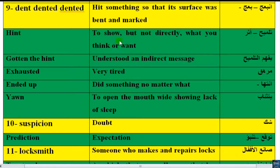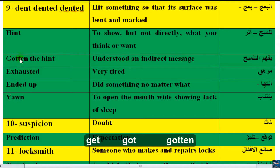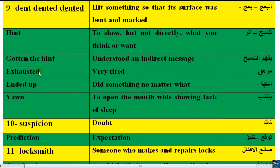'Got in' — the hand gesture to show something but not directly. 'Got in' uses the verb 'get,' past tense 'got,' past participle 'gotten.' The T sounds like a D: 'got in.' It means to understand an indirect message. 'Exhausted' — the H is silent.